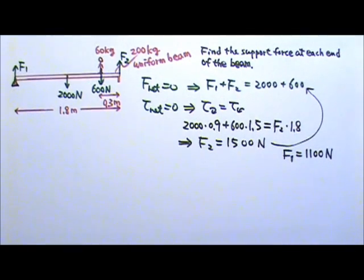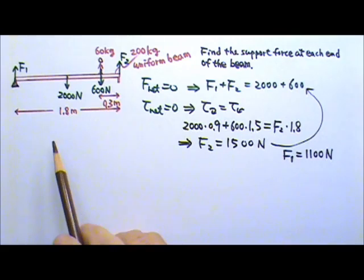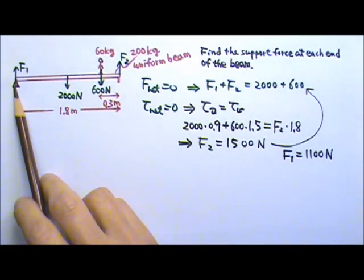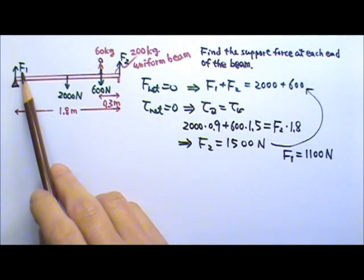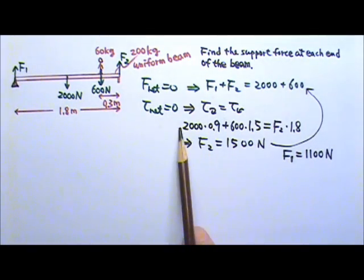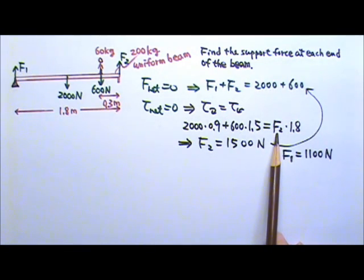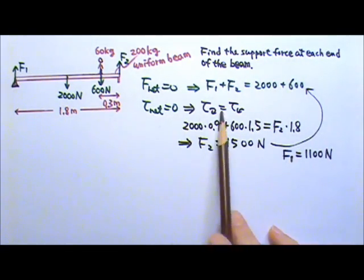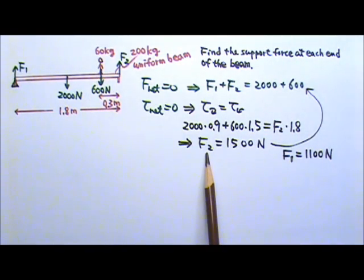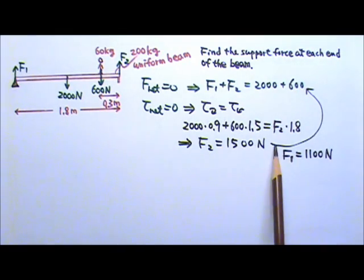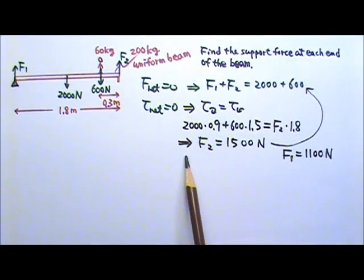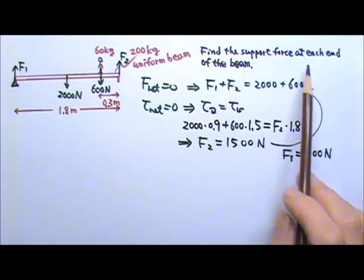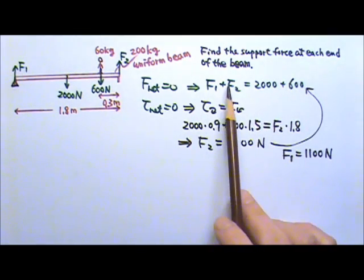Now you can see why it is a good idea to use the left end as our pretend axis. If F1's location is our axis, then F1 gives us zero torque and does not show up in our torque equation. That leaves only F2 in the equation, so we can solve for F2 right away. Then we can plug it back into the net force equation to find F1. I often write net torque equals zero first in such problems, solve for one unknown, then write net force equals zero to find the other.